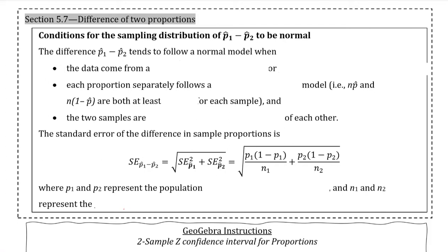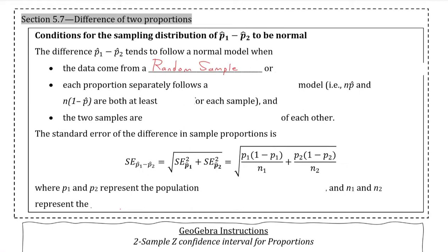We're going to go through first the conditions necessary for the sampling distribution of p-hat sub 1 minus p-hat sub 2 to be normal. These are the same three conditions that we have been using for confidence intervals for quite some time. We need to make sure that we relate it to the fact that we're dealing with two different proportions as well.